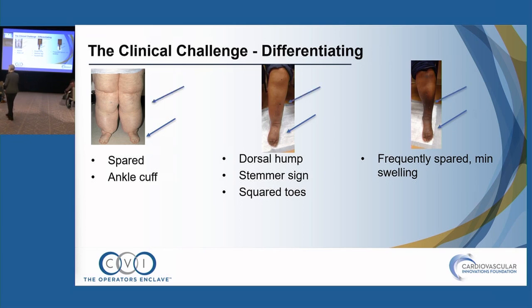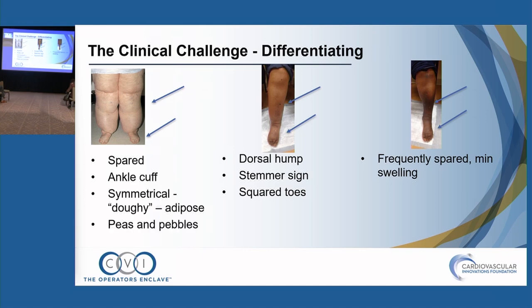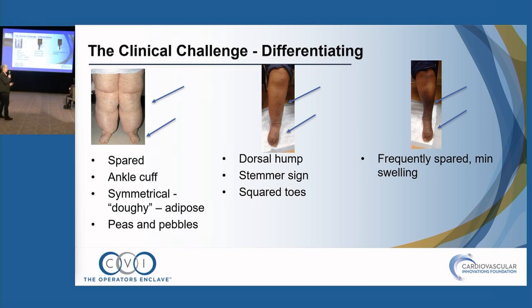Next comes what happens at the calf, or what we call the gaiter area. In lipedema, there is very symmetrical swelling — it's not really swelling, it's adipose tissue. It's very doughy, and if you palpate deeply you'll feel what we call peas and pebbles: very small nodules under the skin. In lymphedema, you'll have early pitting.